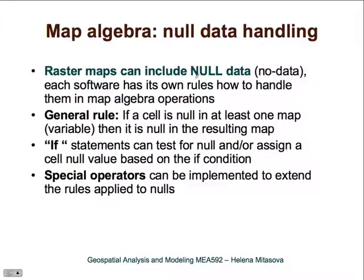One important concept when working with map algebra and GIS in general is null data — these are grid cells where no data are known. It is different from zero. Each software has its own rules on how to handle null data in map algebra operations. The general rule is that if a cell is null in at least one map, then it is null in the resulting map — any null cell propagates all the way to the result. You can use if statements to test for null and assign something different.